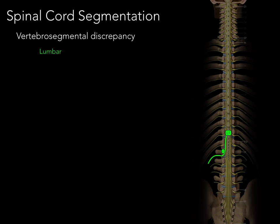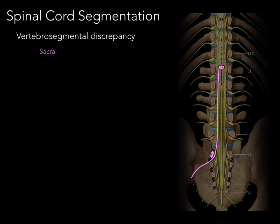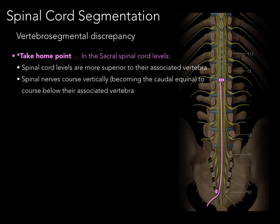At the lumbar level, the vertebral segmental discrepancy gets bigger and bigger. Spinal cord levels are more superior to their associated vertebra, and spinal nerves course vertically, becoming the cauda equina at the bottom of the vertebral canal as they course below their associated vertebra. In the sacral level, this vertebral segmental discrepancy continues — S2, S3, S4, S5 — with spinal cord levels more superior to their associated vertebra, and those spinal nerves coursing vertically as part of the cauda equina to exit below their associated vertebra.